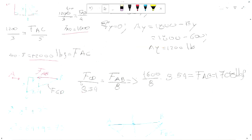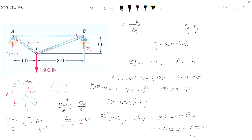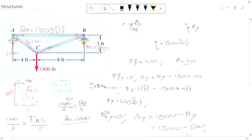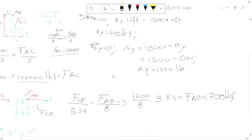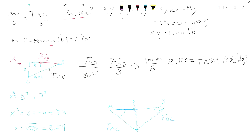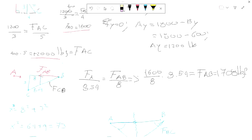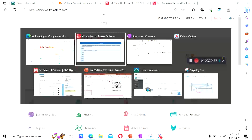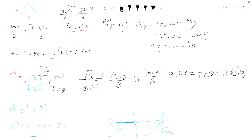In summary, for this example: all forces are in tension. FAB equals 1708 pound-force. Ay is 1200, By is 600. AC is 2000 and CD — same as BC — is 1600. So we found all the internal member forces by using triangle ratios.